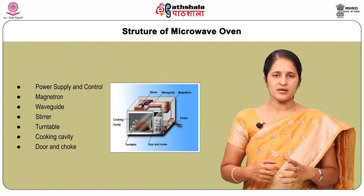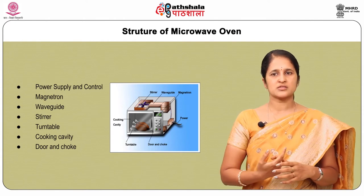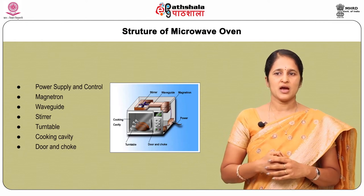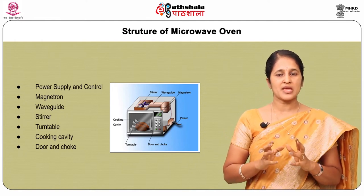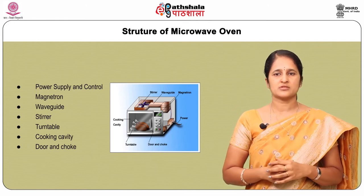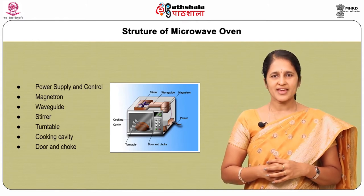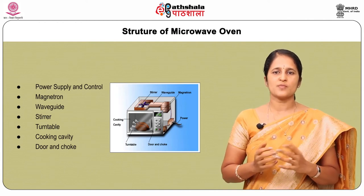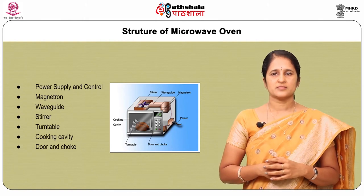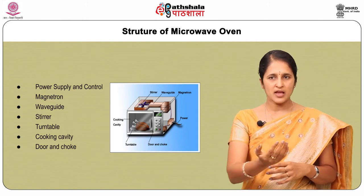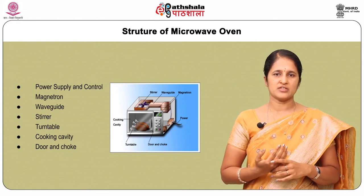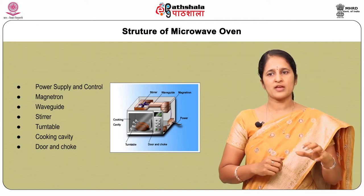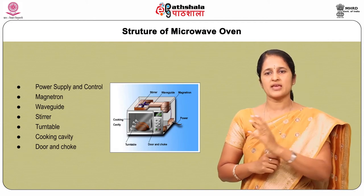The stirrer is commonly used to distribute the microwaves from the wave guide to allow more uniform heating of food. The turntable rotates the food through fixed hot and cold spots inside the cooking cavity, allowing food products to be evenly exposed to the microwaves. The cooking cavity is the space inside where the food is heated when exposed to microwaves. The door and choke allow entry of food to the cooking cavity and prevent microwaves from leaking between the door and the cooking cavity.